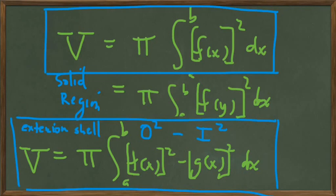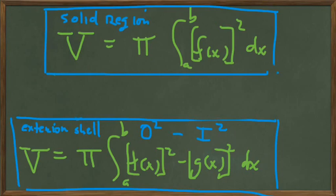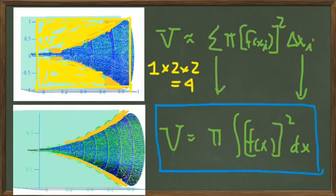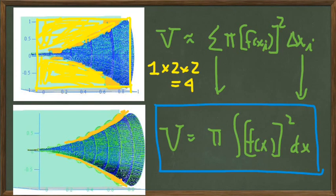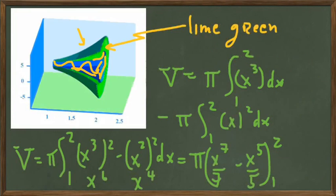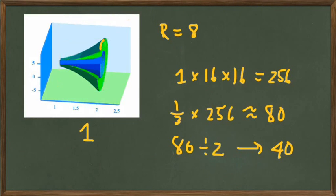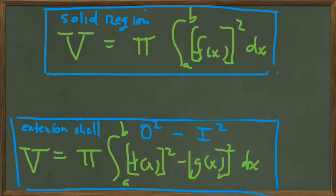So there we have the two formulas that we applied in this section. The top one, when we have a solid region, which is what we had way back in our first example here, where we're finding the volume of this dark blue shaded region. And the second formula is when we have an exterior shell, so we're just finding the volume of this region that was shaded in lime green. This concludes this video on section 6.2, the disk method for finding solids obtained by revolution, or by revolving curves about the axes.